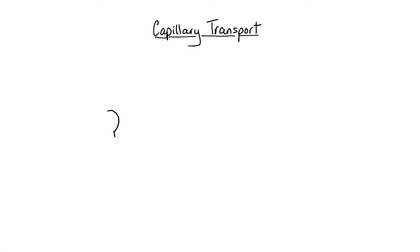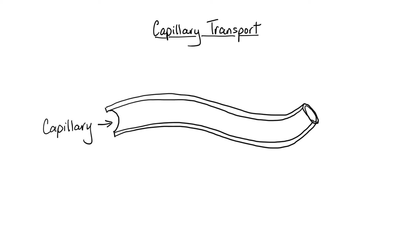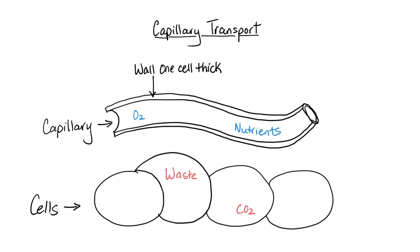If we take a look at the diagram of the capillary here we can see that the capillary is a blood vessel that has walls that are only one cell thick. And this is useful for the transport of substances in and out of the cell.